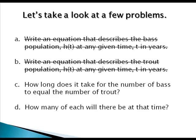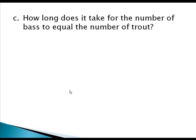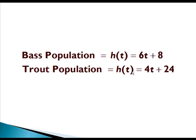So parts A and B are complete, and now for part C: how long does it take for the number of bass to equal the number of trout? We have a system of equations. The bass population is represented by one equation and the trout population by another. We can solve this system graphically — these two curves should intersect, and the intersection will be our solution.